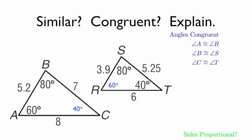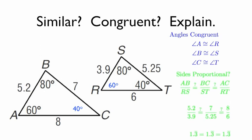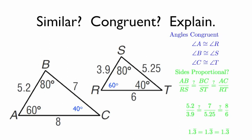All three corresponding sides: AB must correspond with RS, BC must correspond with ST, and AC must correspond with RT. We need all three of those ratios to be equal. So 5.2 divided by 3.9, is that equal to 7 divided by 5.25, and is that also equal to 8 divided by 6? If you pull out your calculator, you see that all three equals 1.3 repeating. Therefore, the sides are proportional, and triangle ABC is similar to triangle RST.